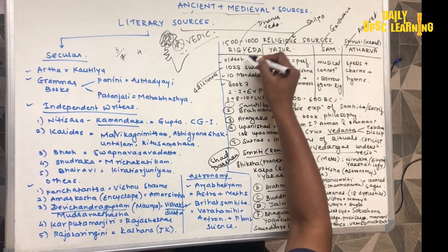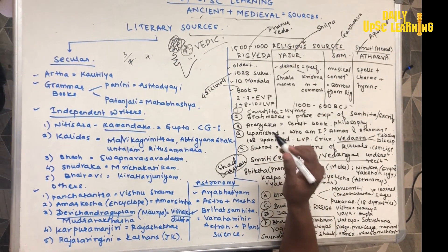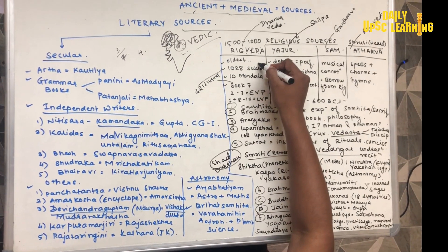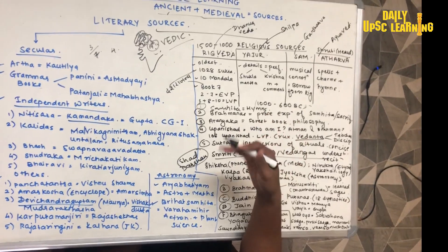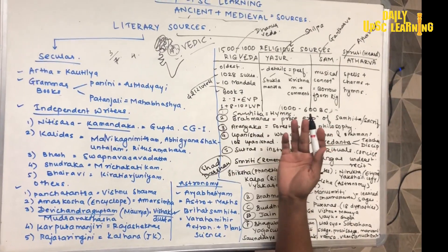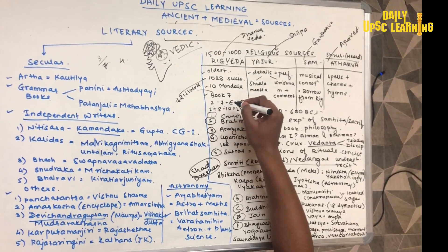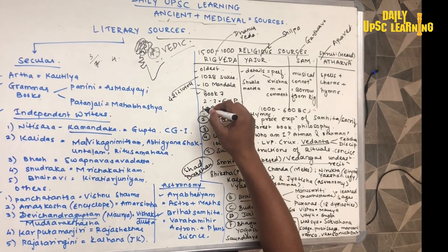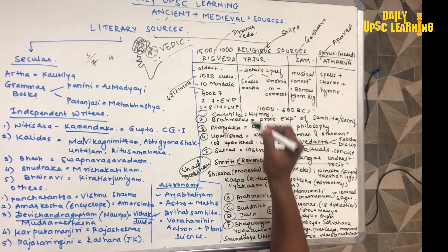Rigveda was the oldest surviving literature of this world. It had 108 suktas — suktas means hymns, that is mantras — and 10 mandalas, that is 10 books. In these, books 2nd to 7th belong to the Early Vedic period, and books 1 plus 8 to 10 belong to the Later Vedic period.